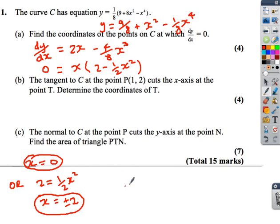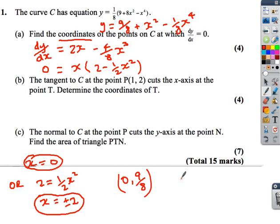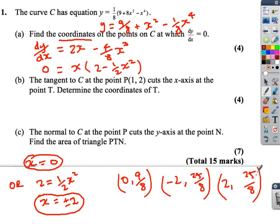Once we've found the x values, we want to find the coordinates, so we need to find the y values. We put x equals 0, x equals 2, and x equals minus 2 back into the initial equation. Therefore we get three different coordinates: (0, 9/8), (−2, 25/8), and (2, 25/8). Three possible solutions.